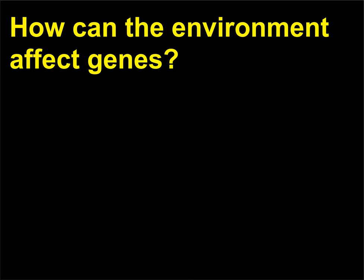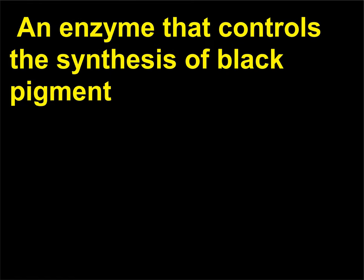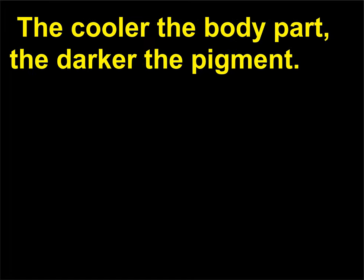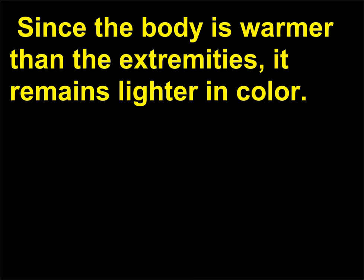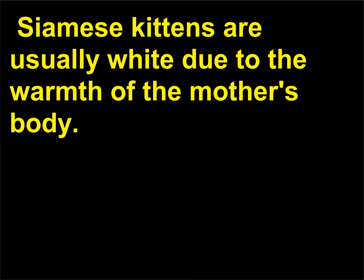How can the environment affect genes? Some genes are sensitive to temperature. An enzyme that controls the synthesis of black pigment, melanin, in Siamese cats is only active at cool temperatures. The cooler the body part, the darker the pigment. Since the body is warmer than the extremities, it remains lighter in color. During the winter, if your Siamese cat goes outdoors, the fur may become darker. Siamese kittens are usually white due to the warmth of the mother's body.